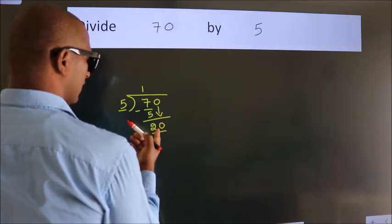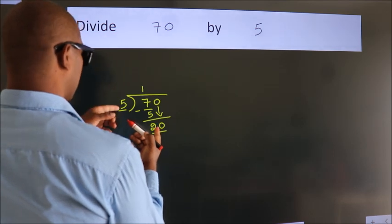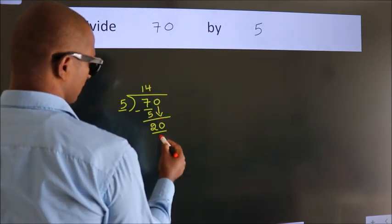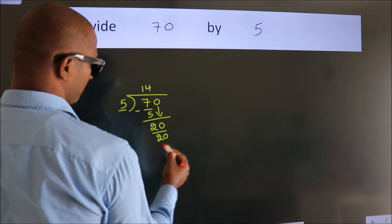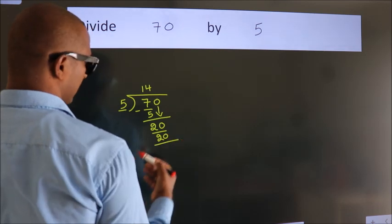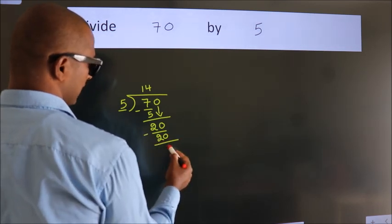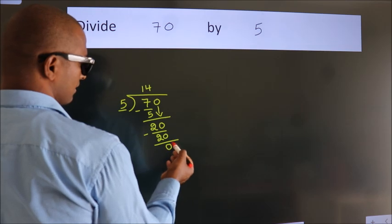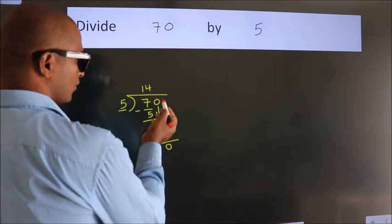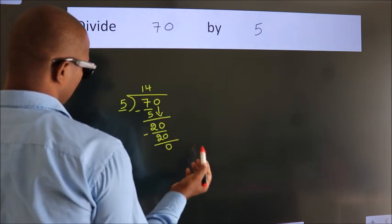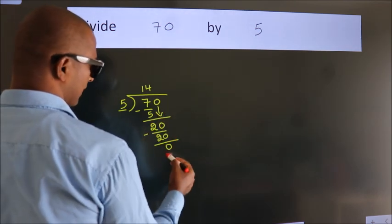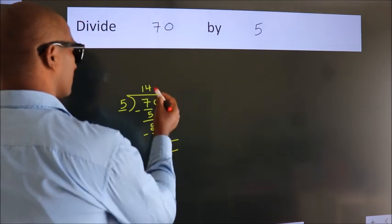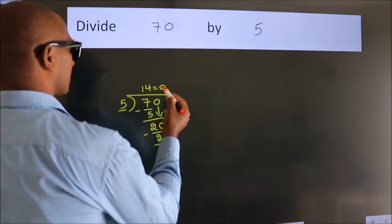When do we get 20 in the 5 table? 5 fours 20. Now we subtract. We get 0. After this, no more numbers to bring it down. And we got remainder 0. So this is our quotient.